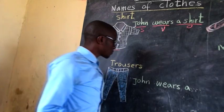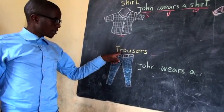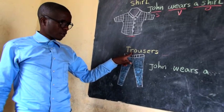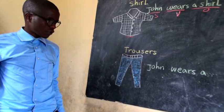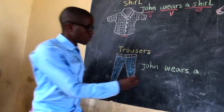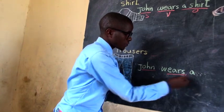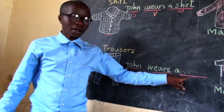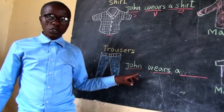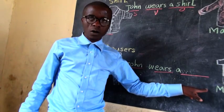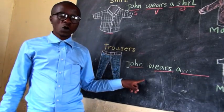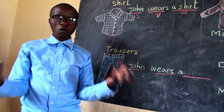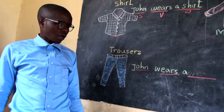This is a tausas. You can say: John wears a tausas. John puts on a tausas. John dresses a tausas.